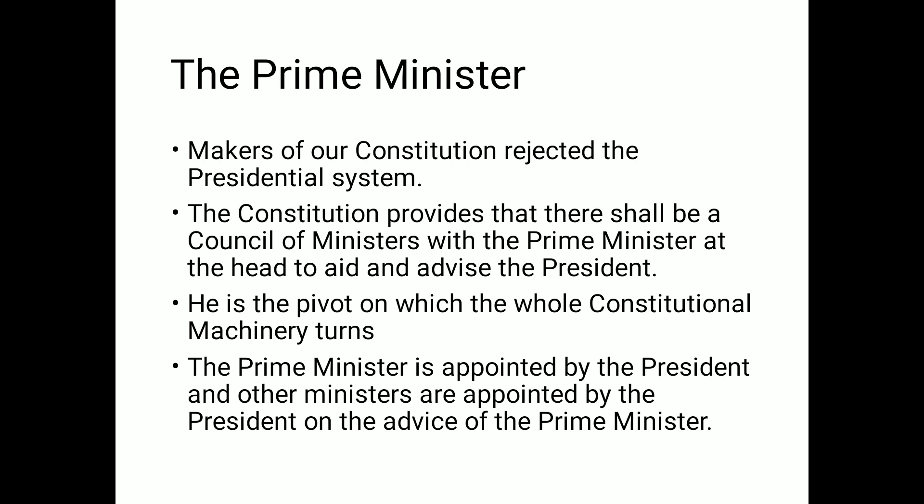The Prime Minister is appointed by the President, and other ministers are appointed by the President on the advice of the Prime Minister. Always remember: the Prime Minister is elected through public mandate using universal adult franchise — that is, everyone who has attained the age of 18 years and above has the right to vote. After getting elected, the Prime Minister forms his government in the Parliament, specifically in the Lok Sabha.